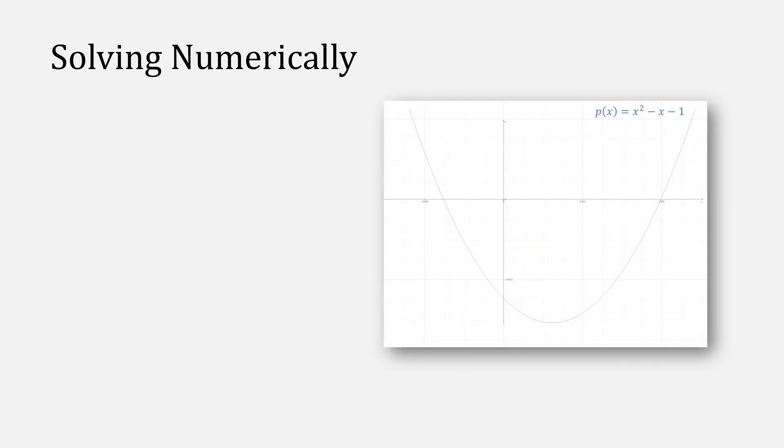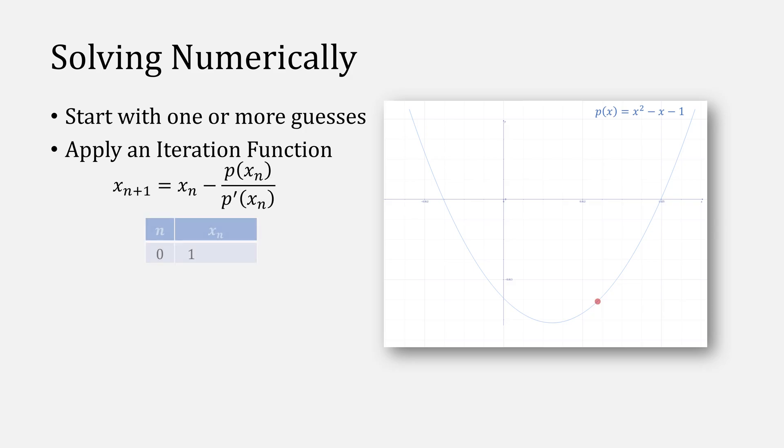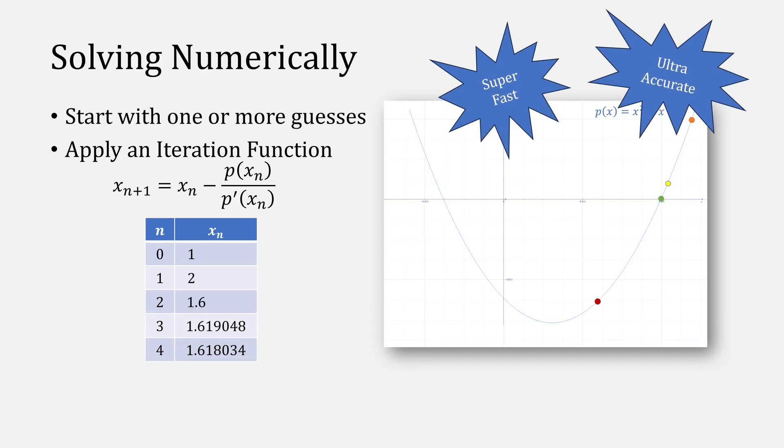To solve things numerically, the normal process is to start with one or more guesses, and then apply an iteration function such as Newton's method. In our starting value of 1, we can apply three iterations of Newton's method to converge relatively quickly. This is super fast and super accurate.